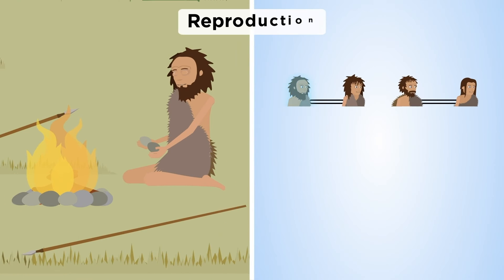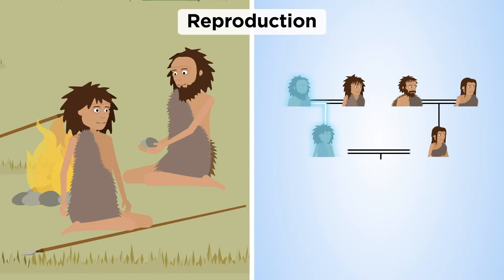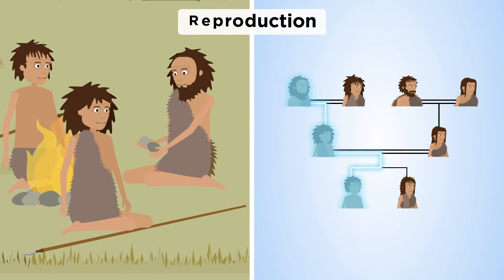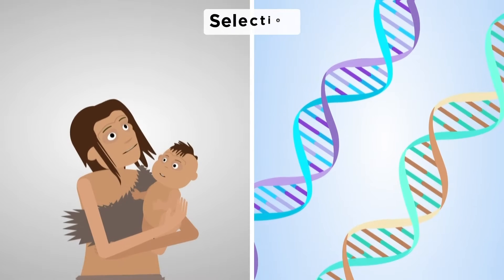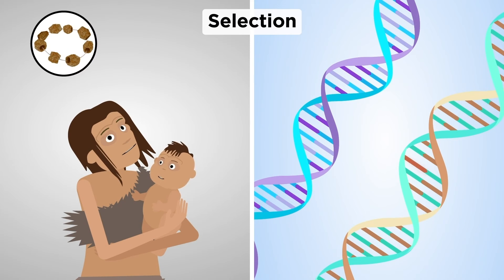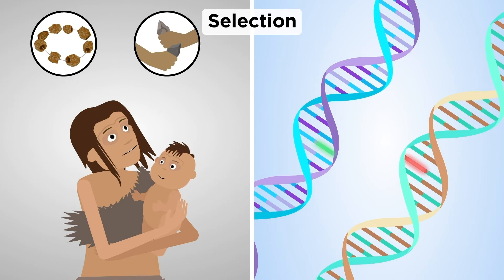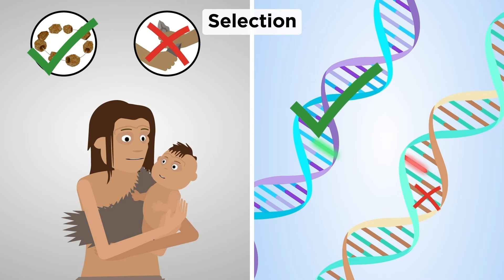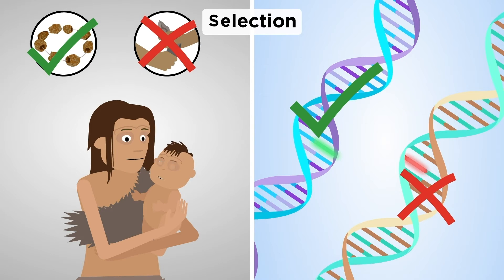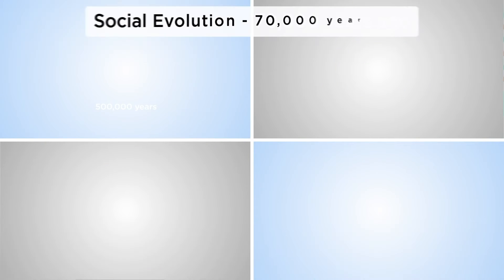Learnt skills and mutations that influence learning ability are reproduced. The best skills are selected for the next generation, and mutations may or may not support selected skills.